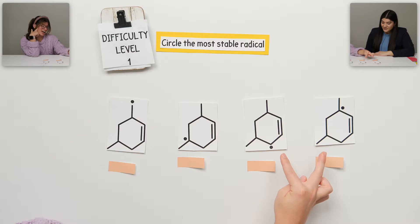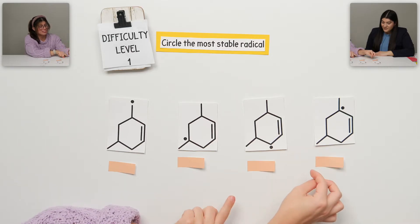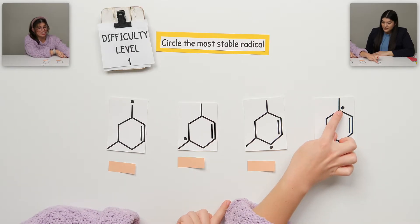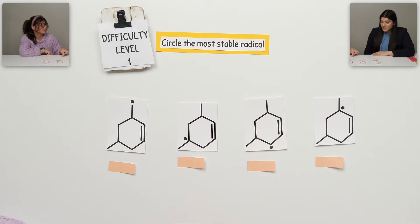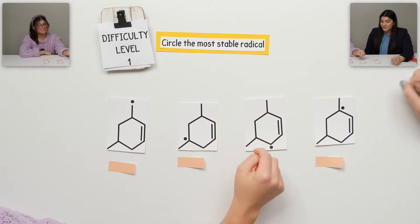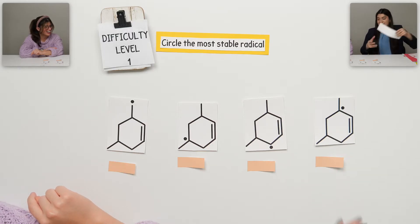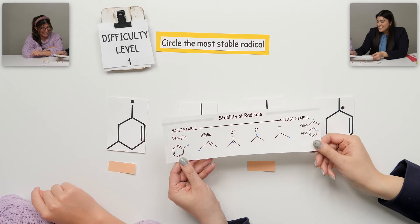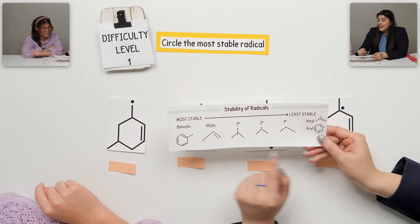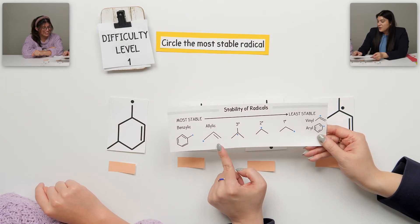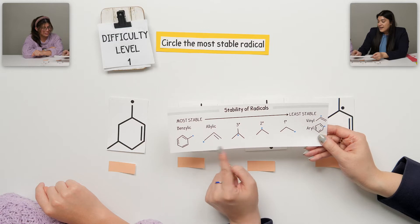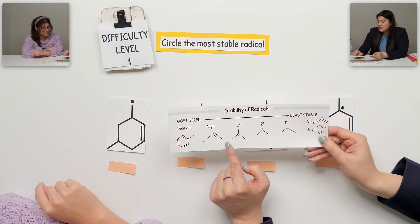But then we have to look at how many substituents there are. And that one has three. Or I guess it'd be like tertiary. Tertiary. So it'd be that one. Look at you. OK. So what you're looking at was the stability of the radicals, which you said. And you know that the most stable is going to be the one that's allylic, that's adjacent to that double bond.